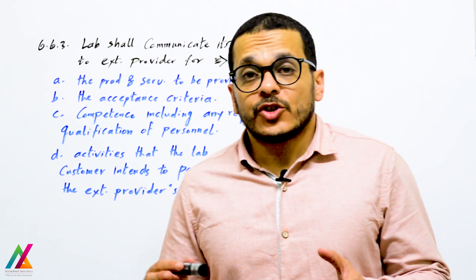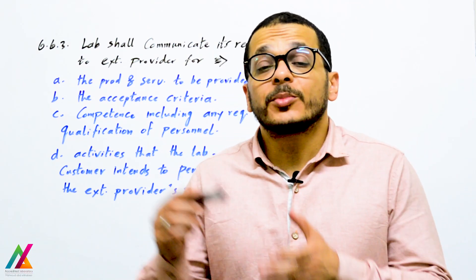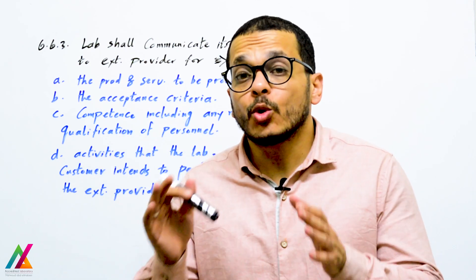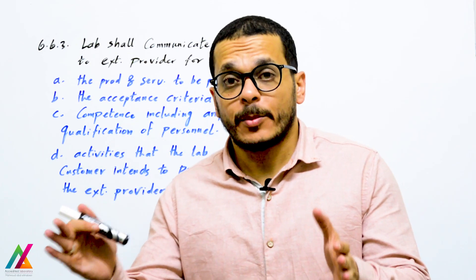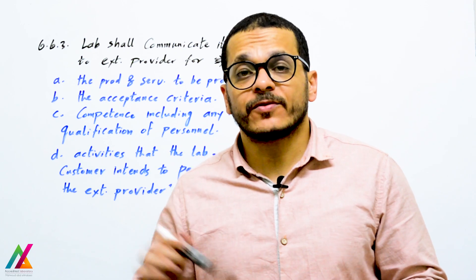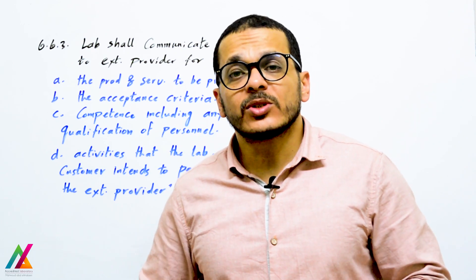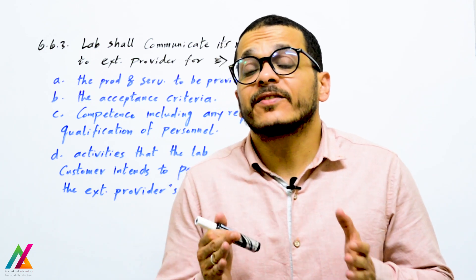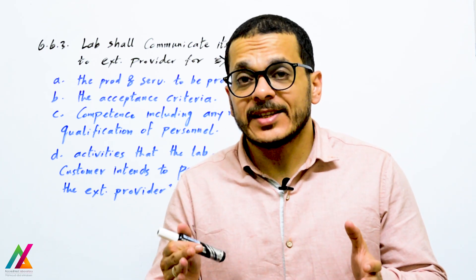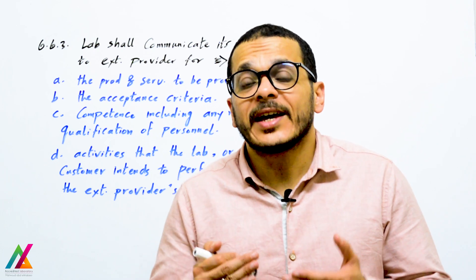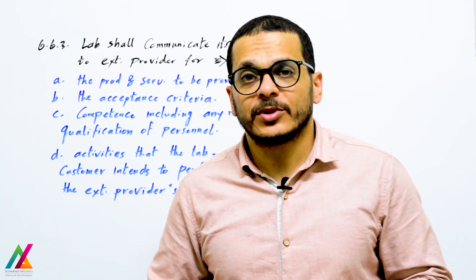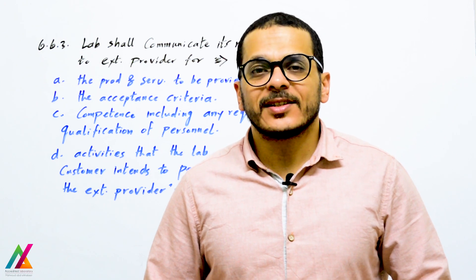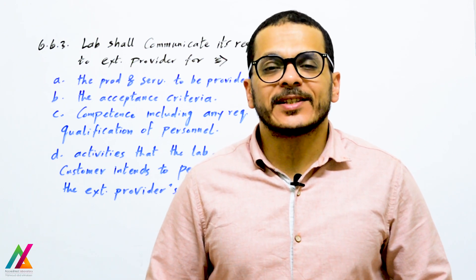Regarding main changes compared to the previous edition: in the previous edition, the list of approved suppliers and vendors was mentioned in clause 4.6.4, but in the 2017 edition it is not explicitly mentioned. However, this list remains very important to maintain as a historical record for the lab. That was the end of today's lecture — thank you and see you in the next lecture.